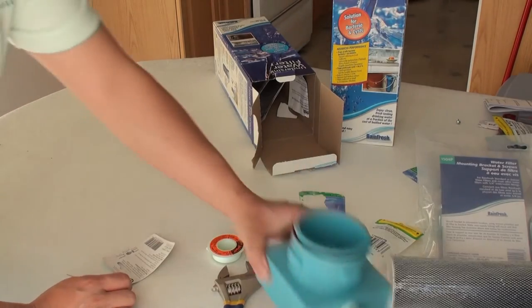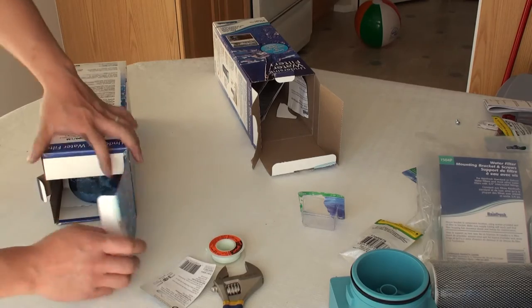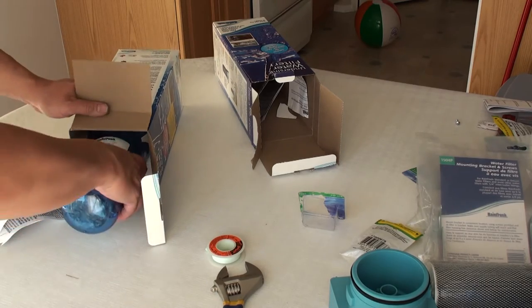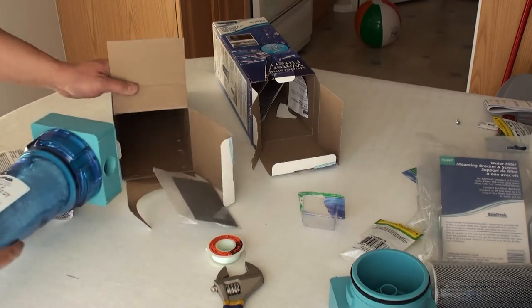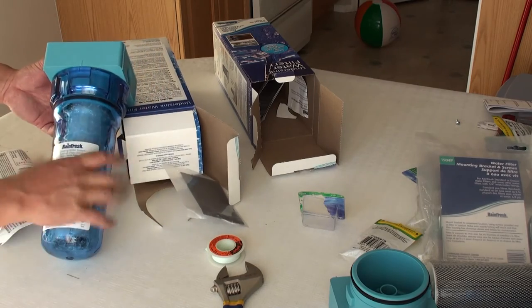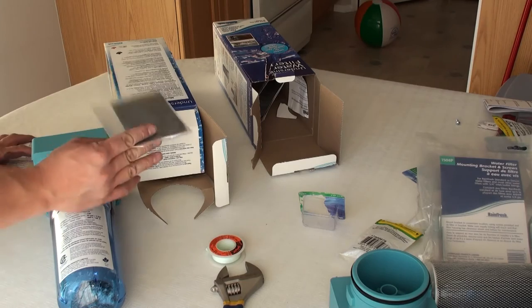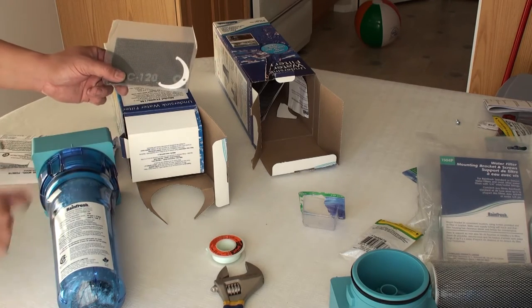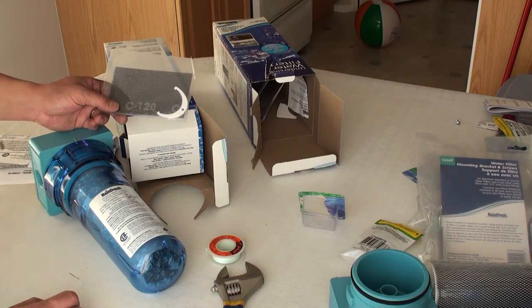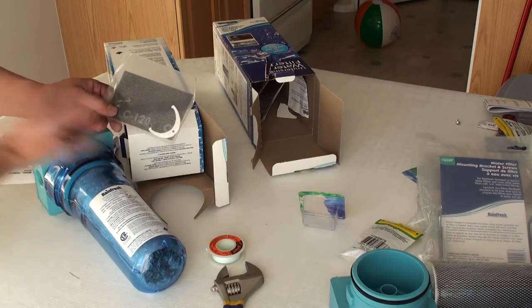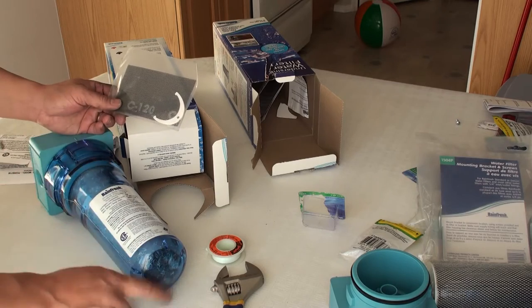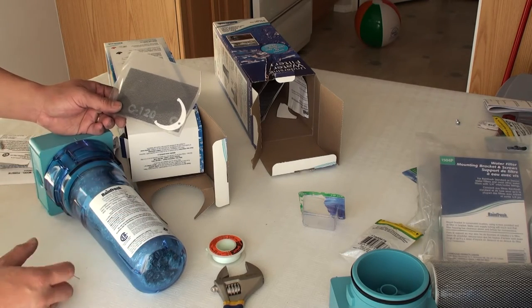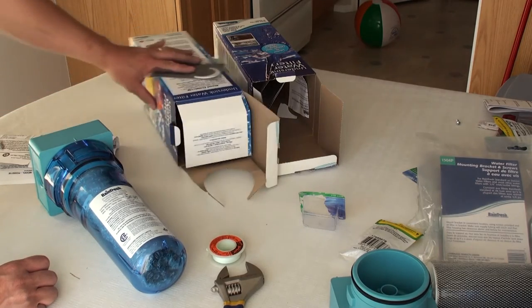Now that stage one's housing is assembled we can unbox stage two's filter. On stage two, the model FC triple zero, you've got to pay careful attention to the unboxing because there's actually some pieces inside this box of importance. Inside the FC triple zero, the one that filters bacteria, there's actually a cleaning screen which is really comprised of a drywall sanding screen as well as a ceramic cartridge diameter measurement tool used to measure the outside diameter of this filter.